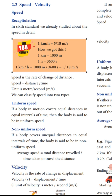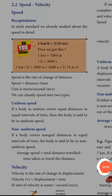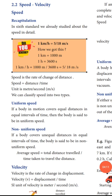Next, speed and velocity. Speed is the rate of change of distance. Speed equals distance divided by time. The unit is meter per second (m/s). Speed is classified into two types: uniform speed and non-uniform speed. Uniform speed means the body covers equal distance in equal intervals of time. Non-uniform speed means the body covers unequal distances in equal intervals of time.